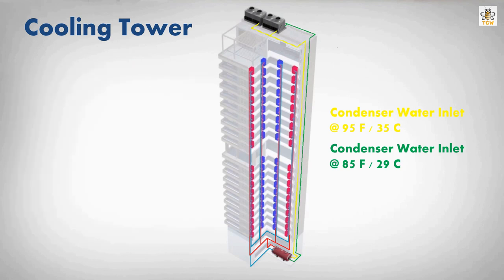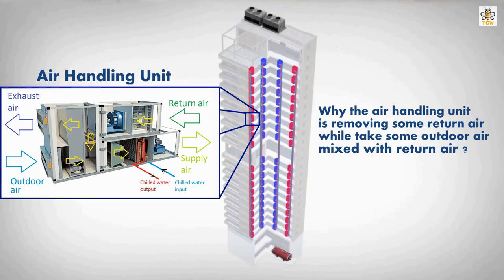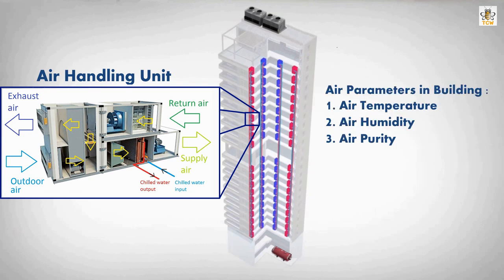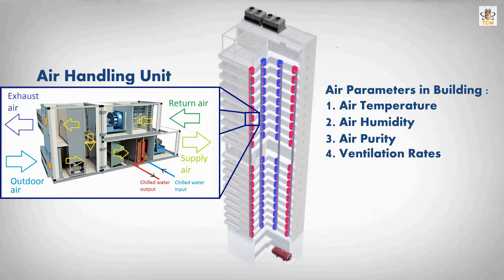That covers how the building air conditioning system works. Regarding the earlier question about exhaust air and outdoor air in the air handling unit: the answer is that the building air must not only remain cool and clean, but must also be comfortable for breathing. The existing air needs to be replaced with fresh air from outside — or ventilation, in short.